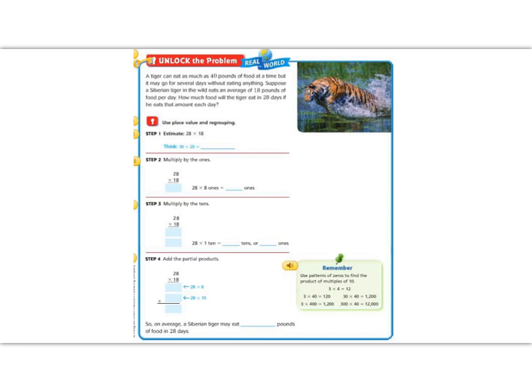But today, instead of using our magic zero to multiply two-digit numbers, we're going to be using a method called partial products. We know that the word product means that we're going to multiply, and partial means a part, so we're going to multiply one part at a time.